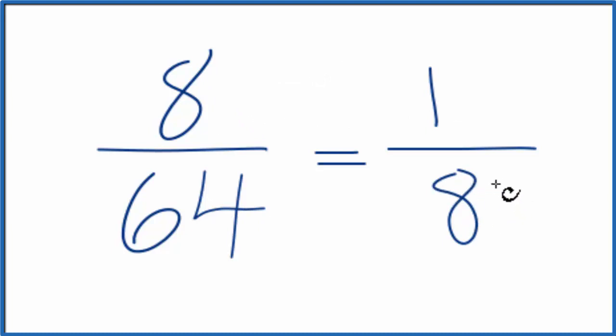We can't reduce this any further. These values are the same - if you divide 8 by 64 and 1 by 8, you'll get the same number. There's another way we could do this. If you didn't know that 8 times 8 was 64, we could do it this way.